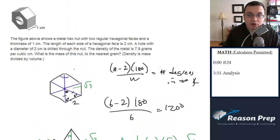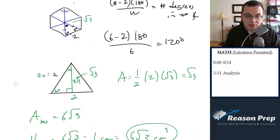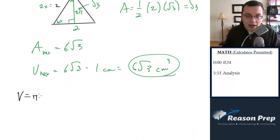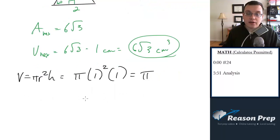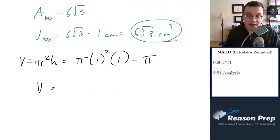This hole has got a diameter of 2, which means it's got a radius of 1. So we can find the volume of this. It's basically just a cylinder, if you imagine it's extending to the other side. Let's find the volume of the cylinder. We'll subtract it from the volume of the nut. The volume of a cylinder is pi r squared h. So in this case, it's going to be pi times 1 squared times 1. So it's just pi. So the final volume of our nut is 6 radical 3 minus pi.